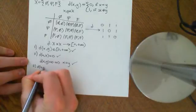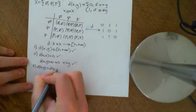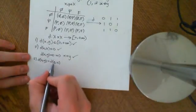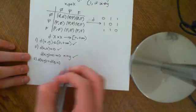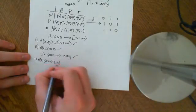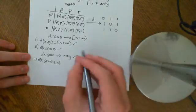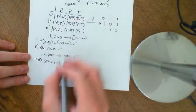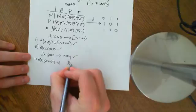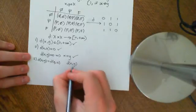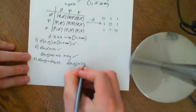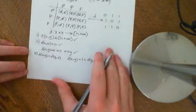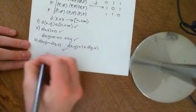The third axiom is that d(x,y) equals d(y,x). If x and y are the same, then swapping them clearly gives the same result. If x and y are not equal, then d(x,y)=1 and d(y,x)=1 as well, since y and x are still not equal to each other. So the symmetry axiom clearly holds.